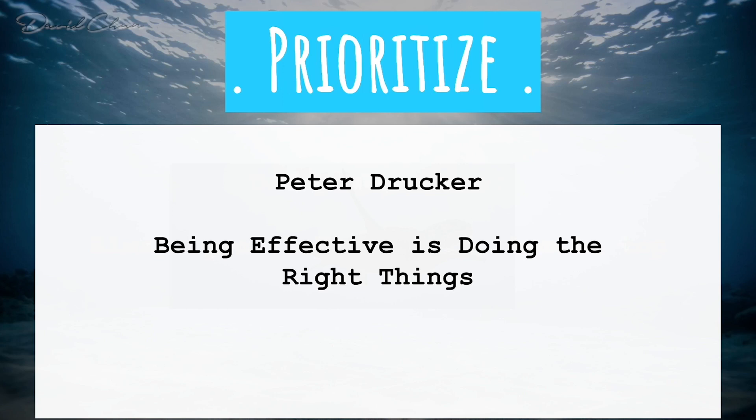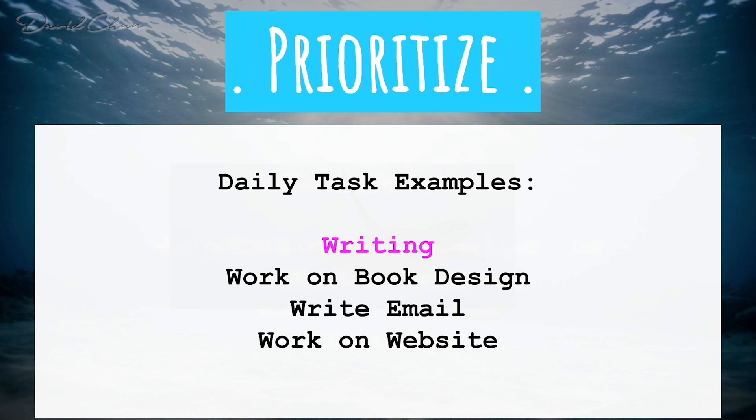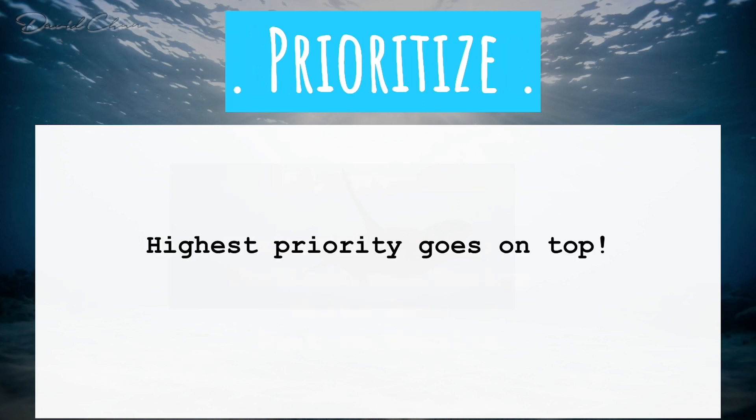For the book-writing example, if your daily tasks are book design, writing emails, website work, and writing — a better prioritization is simply putting writing on top, because that is the most important thing and the one that gets you closer to your goal. Maximize efficiency and effectiveness: highest priority goes on top.